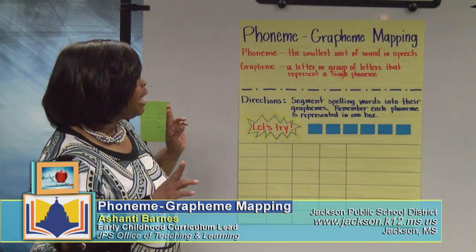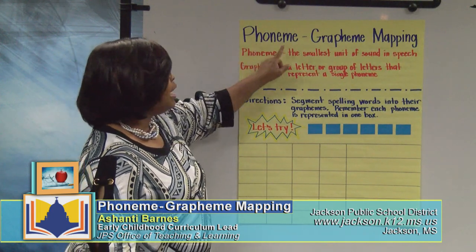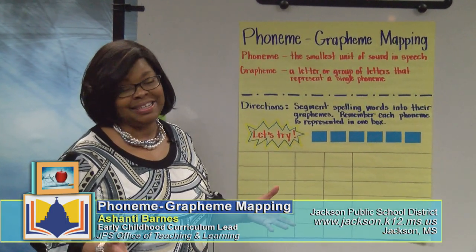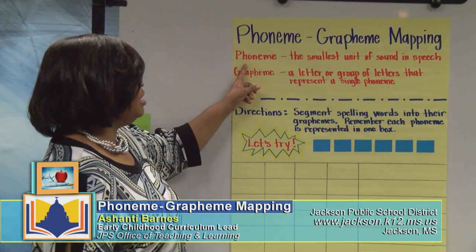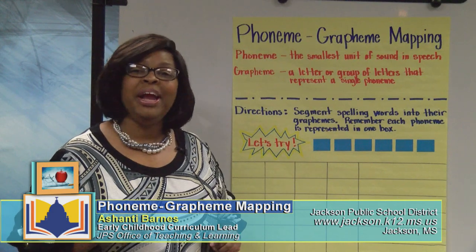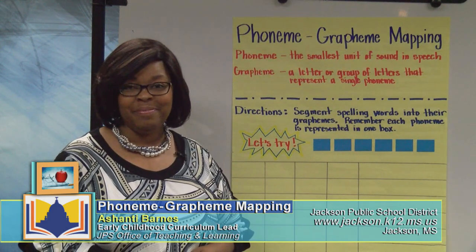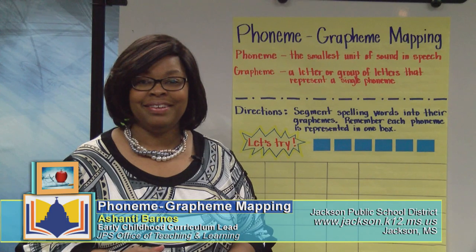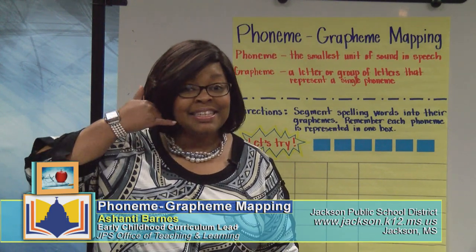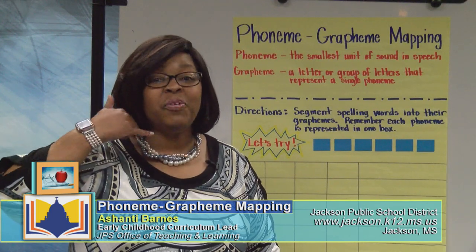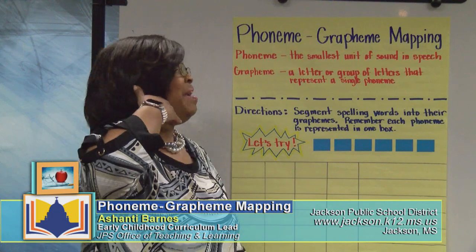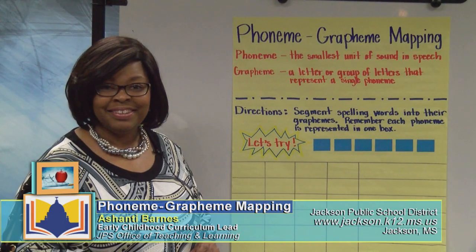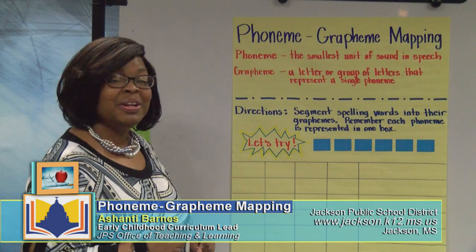If you notice, our strategy has two main words: Phoneme and Grapheme. Let's make sure we understand what those words mean before we delve into the practice. So here we have Phoneme. Do you hear another word inside Phoneme? That's right — phone. When you hear phone, what do you typically think about? Absolutely — sound. This is our symbol or signal for sound, as if we are talking on a telephone. A Phoneme is the smallest unit of sound in speech.